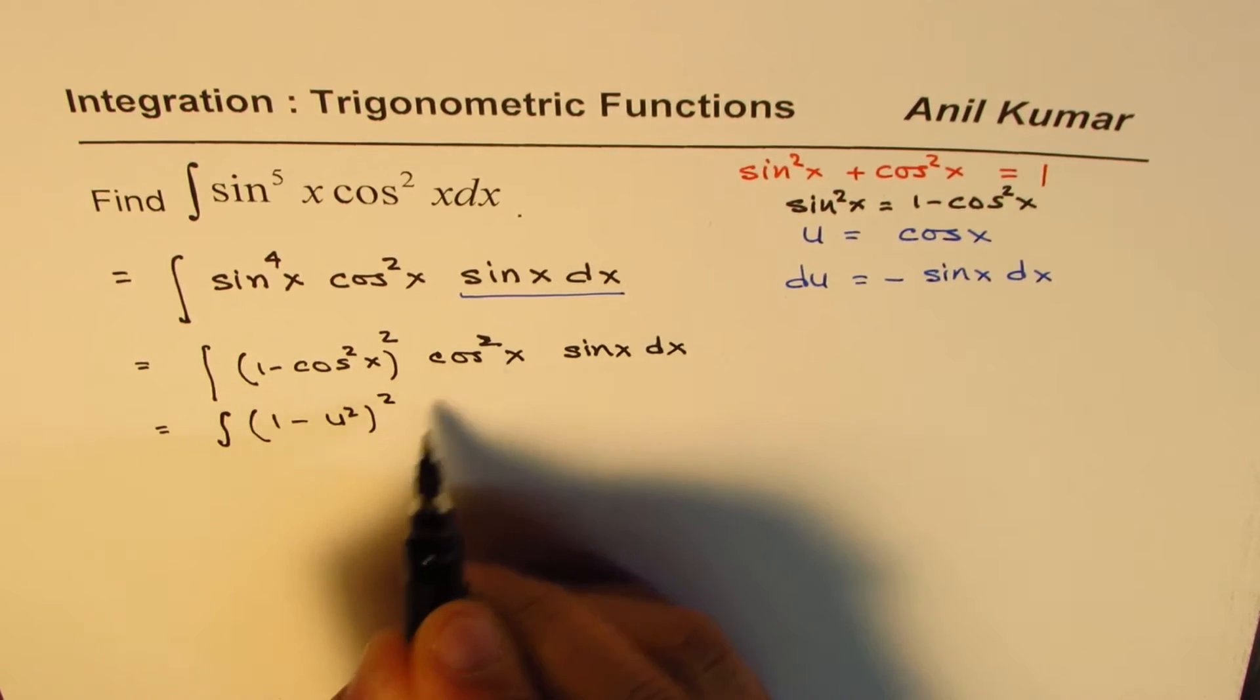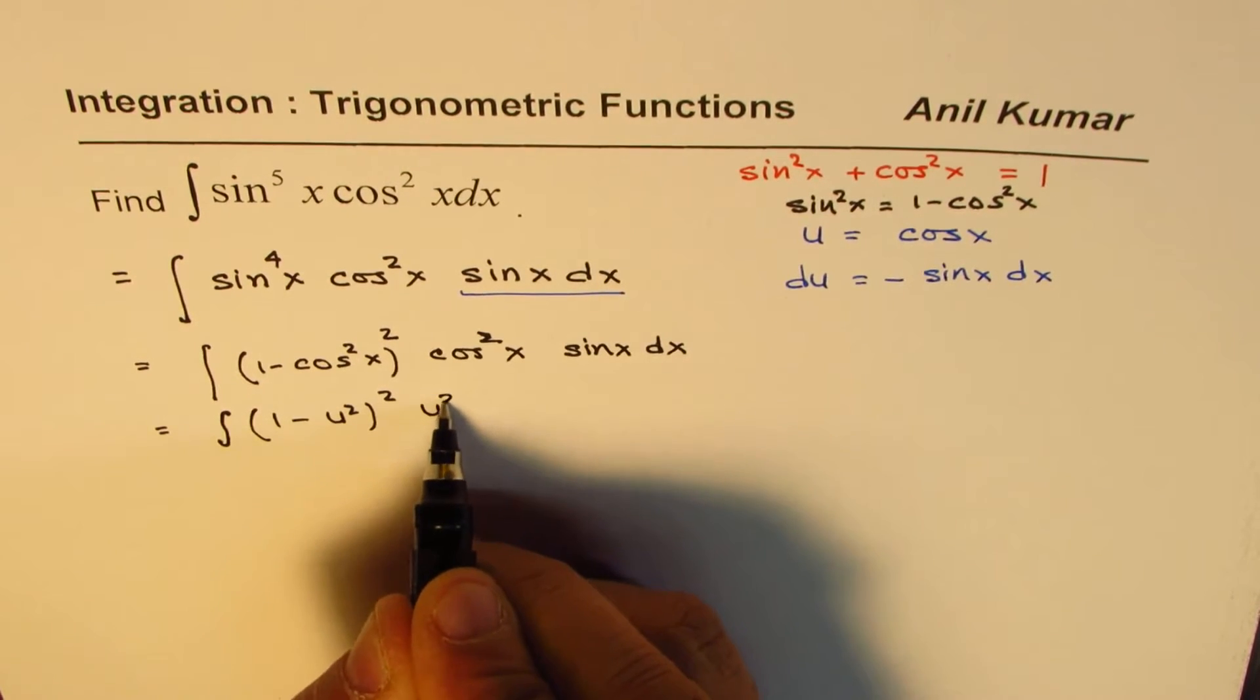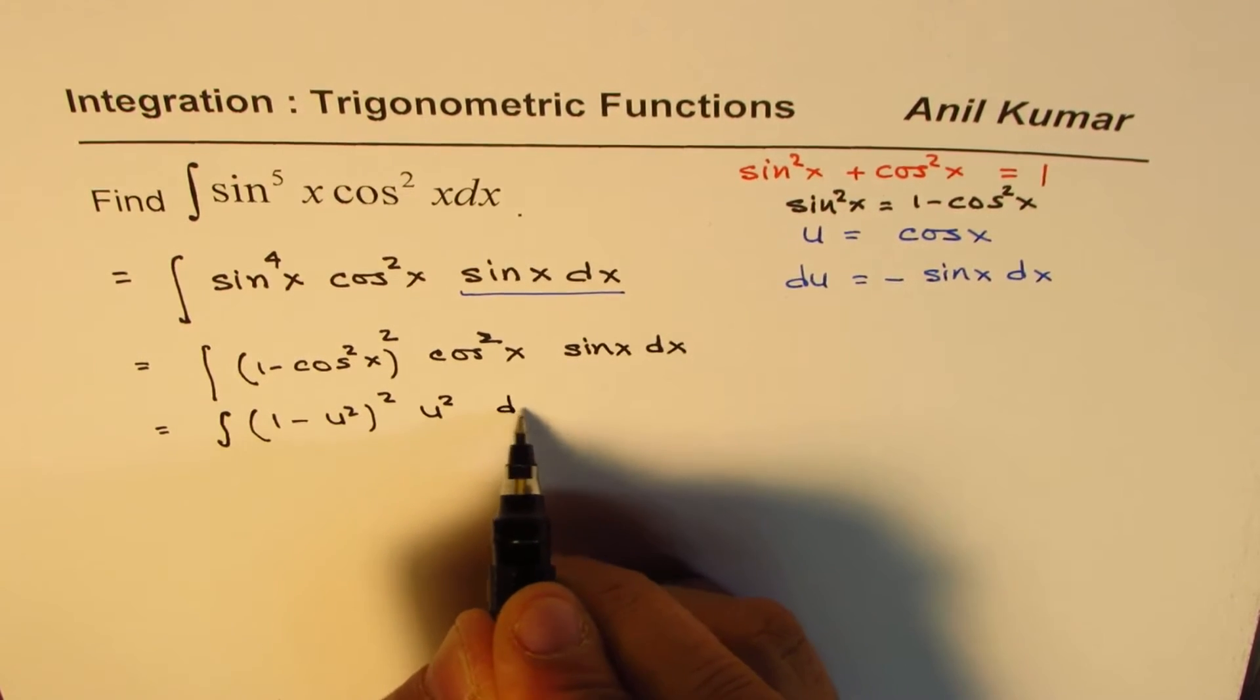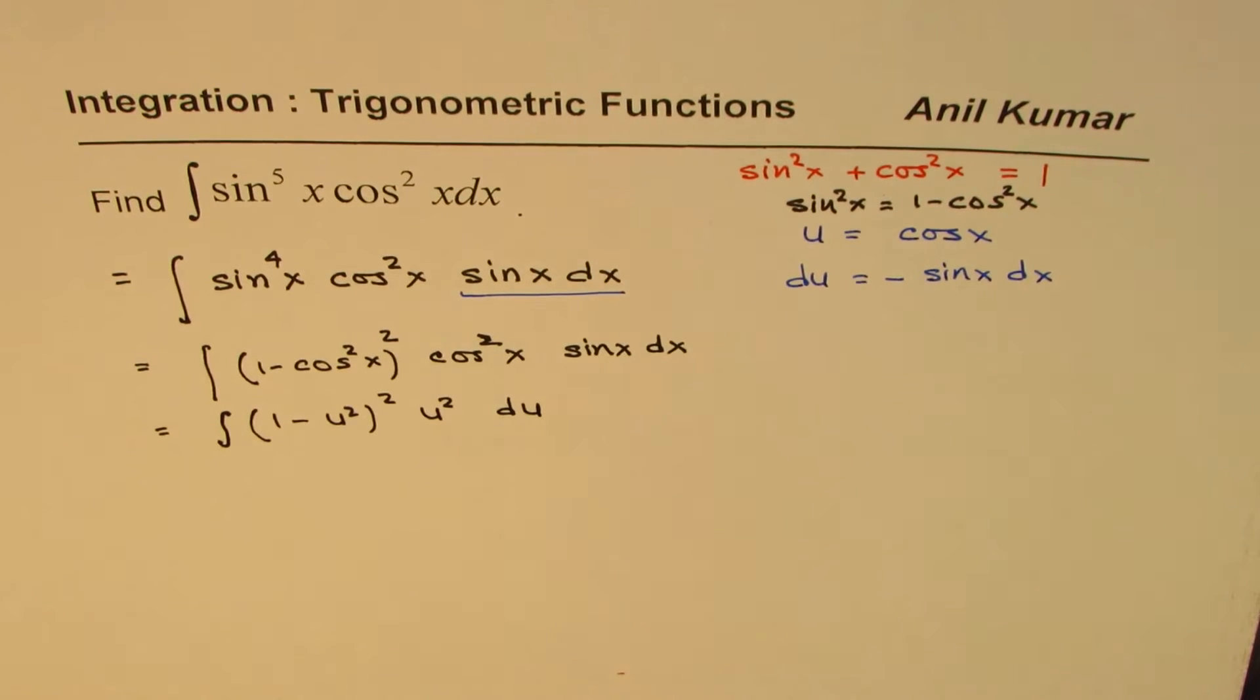Whole square, and that is again u square, and sine x dx is du. Do you see that? So that is how you have to substitute and then simplify.